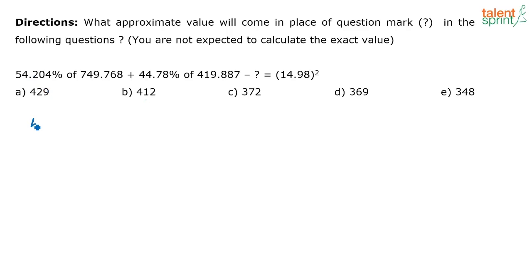So how do you solve this? This 54.204, let's try to omit all the decimals. I can take it as 54 percentage. This 749.7, I'm taking it as 750. Again here 44.78, you can take it as 45 percentage. 419.88, you can take it as 420. Then you have minus question mark equals 14.98 - take it as 15 squared. So that is the closest approximation that you should do to get an accurate answer. Otherwise, if you take this as 50 and all, sometimes you will not arrive at the exact answer because here options are not so farly spaced.